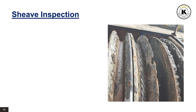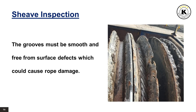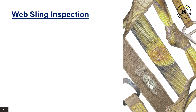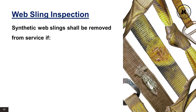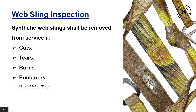For sheave inspection, the grooves of the sheave must be smooth and free from surface defects which could cause rope damage. For web sling inspection, the synthetic web sling shall be removed from service in case of cuts, tears, burns, punctures, illegible tag, or broken or worn stitches.